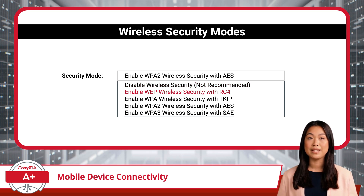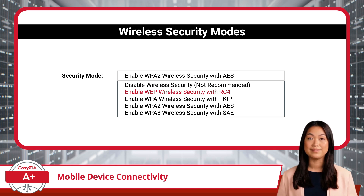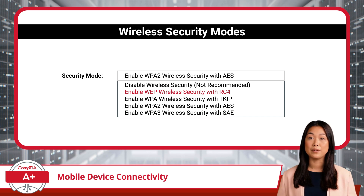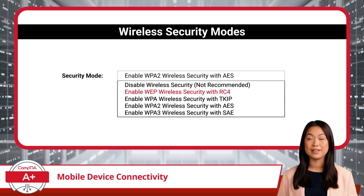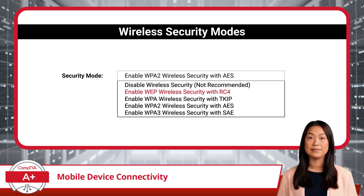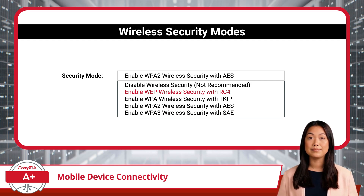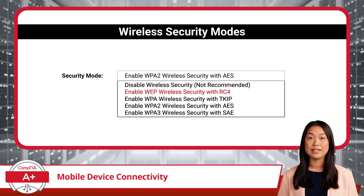Next, we have the option to enable WEP, or Wired Equivalent Privacy Encryption. WEP employs the RC4 algorithm for encryption and decryption of data packets. While WEP was once commonly used, it's now considered insecure due to its susceptibility to attacks. Think of it as using a flimsy lock on your front door — it might offer some protection, but it's easy for someone with malicious intent to bypass. Enabling WEP might provide basic security, but it's not recommended for modern networks due to its vulnerabilities.